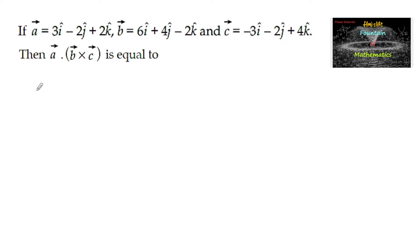If vector a equals 3i minus 2j plus 2k, vector b equals 6i plus 4j minus 2k, and vector c equals minus 3i minus 2j plus 4k.